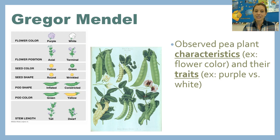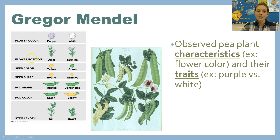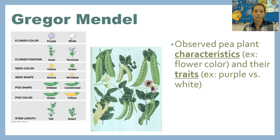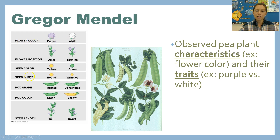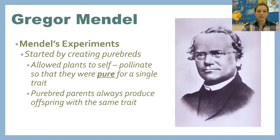He was observing pea plants, and pea plants have a lot of observable characteristics. Characteristics would be things like flower color, flower position, seed color, seed shape, pod shape, pod color, and stem length. Each of those has two possible traits. For example, the characteristic flower color has the traits purple or white. Seed shape can be round or wrinkled. Pod color can be green or yellow. Pick one of those for number three on your notes organizer.